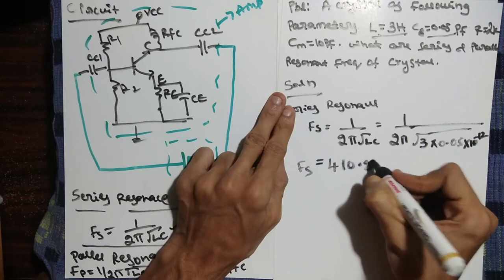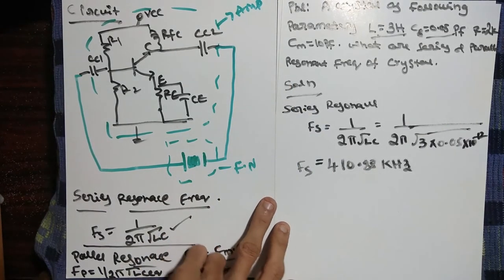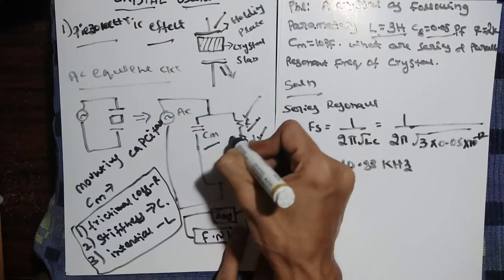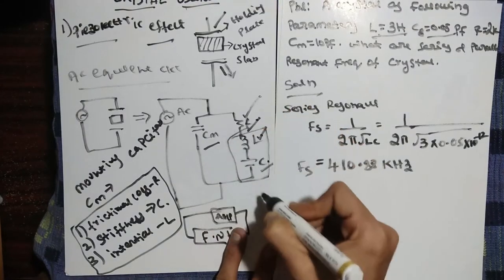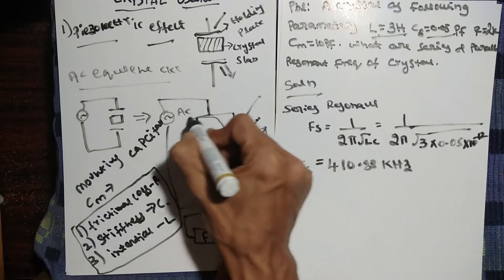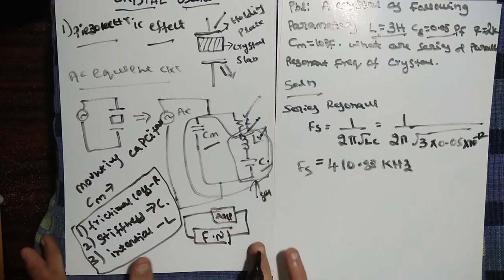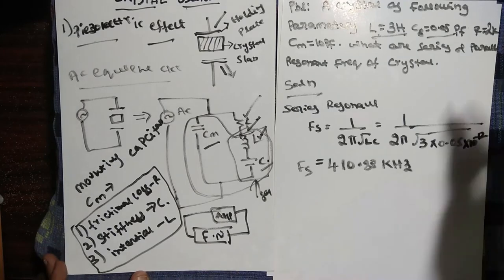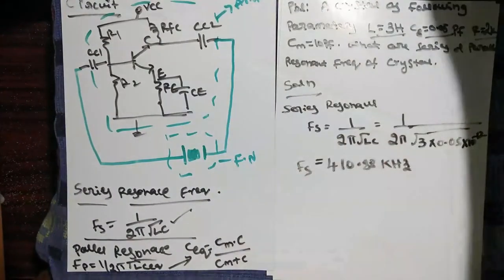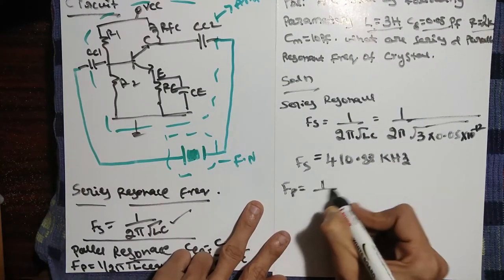So fs = 410.88 kHz. Similarly, for fp, note that for both series and parallel resonance the resistor R = 2 kΩ is negligible and ignored. For series resonance we use the series RLC branch only; for parallel resonance we include all elements. Now we calculate fp.